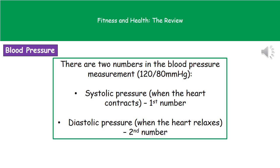To measure someone's blood pressure, we look at two things. First is the systolic pressure, which is the pressure generated when the heart contracts. Second is the diastolic pressure, generated when the heart is relaxed. A blood pressure measurement gives you two numbers — for example, 120 over 80. The units are millimeters of mercury (mmHg), referring back to original devices that used mercury in a tube. The first number is always the systolic and should be the higher of the two; the second is the diastolic.